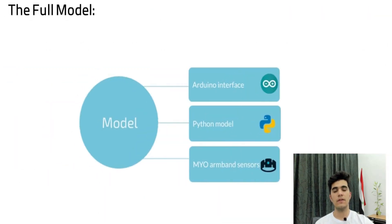The full model consists of three main elements which are the Myo armband that acquires the EMG signals from the forearm and the Arduino microcontroller which receives the data from the Myo armband, and the third one is the Python model that classifies and analyzes the data on Arduino.